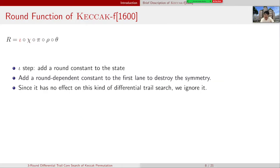Iota step adds a round constant to the state. It adds a round-dependent constant to the first lane to destroy the symmetry. Since it has no effect on this kind of differential trail search, we just ignore it.